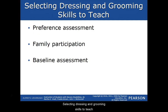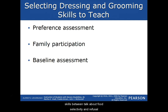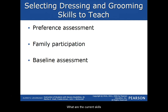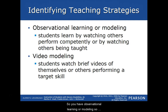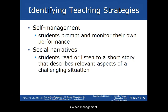When selecting and addressing skills to teach, you can conduct a preference assessment, which is also smart for eating skills, especially when addressing food selectivity and refusal. Family participation is important, as well as a baseline assessment of current skills. Students can also learn through observational learning or modeling — watching other students perform competently or watching others being taught. Video modeling allows students to watch brief videos of a target skill being performed. Self-management enables students to prompt and monitor their own performance.